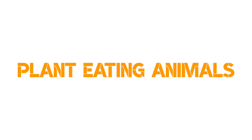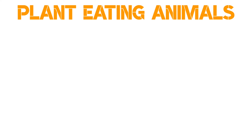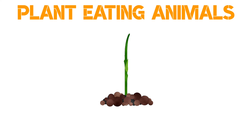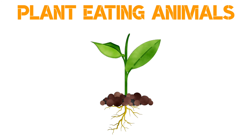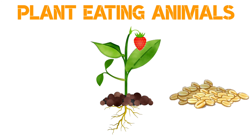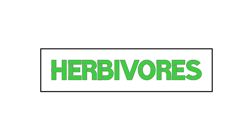Number one: plant eating animals. They feed on different parts of the plant like stem, roots, leaves, branches, fruit and seeds. They are also called herbivores.